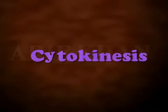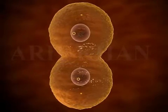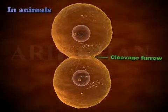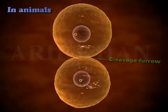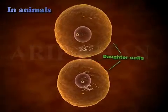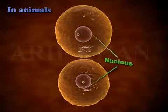Cytokinesis. Cytokinesis is the partition of the cytoplasm. In animals, a cleavage furrow appears in the plasma membrane, which deepens and divides the cytoplasm into two daughter cells, each containing a nucleus.